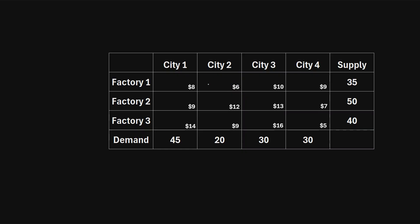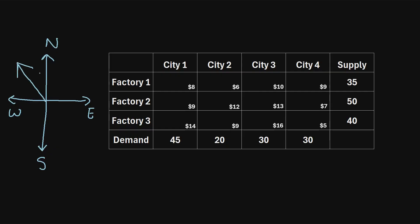To solve this problem using the Northwest Corner method, imagine drawing a compass with directions north, south, east, and west — northwest points to the top left. So when we use this method, we always start with the cell in the top left corner of the table. For this example, that would be this cell right here, which has a shipping cost of $8.